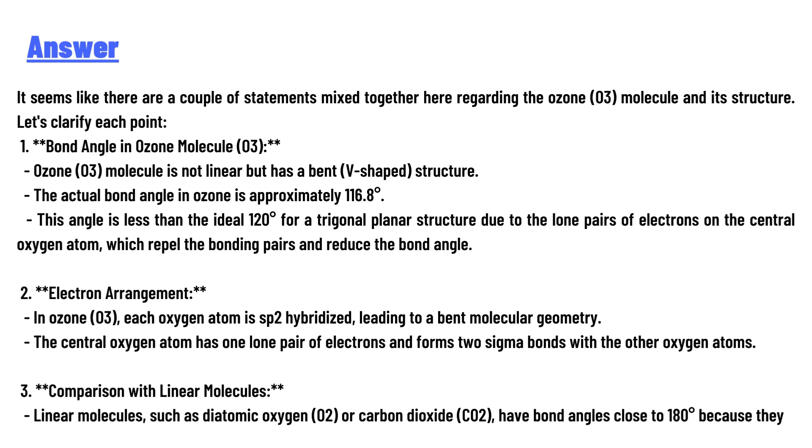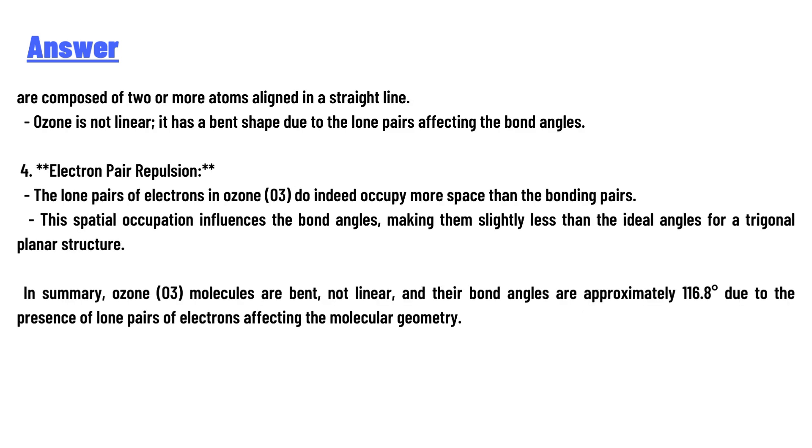180° because they are composed of two or more atoms aligned in a straight line. Ozone is not linear; it has a bent shape due to the lone pairs affecting the bond angles. Fourth, electron pair repulsion: the